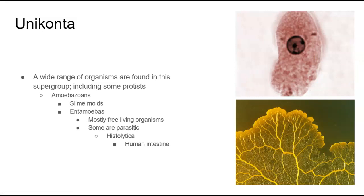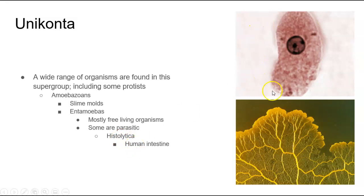We want to talk briefly about what each supergroup is and what kind of organisms you find in each supergroup. Uniconta is going to include some protists such as the amoebozoans, and that will include slime molds. Again, slime molds are not fungi. Another group called antinibas are mostly free-living organisms, and some of them are parasitic, such as histolytica which causes human intestinal disease.